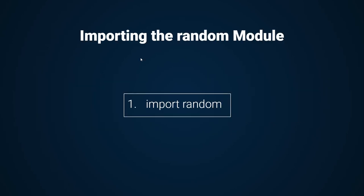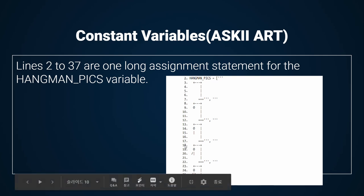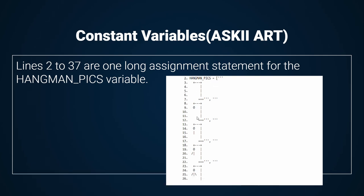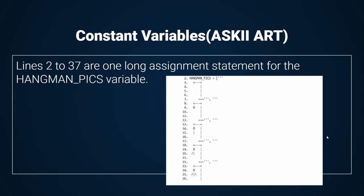Step 1: Importing the Random Module. The Hangman program randomly selects a secret word for the player to guess from a list of words. The Random Module will provide this ability, so line 1 imports it. More than a quarter of this code consists of constant variables, which is the ASCII art for a hangman that I previously showed. I may have provided you the constant variables for the ASCII art, which are the hangman pictures showing the steps of the man being hanged.